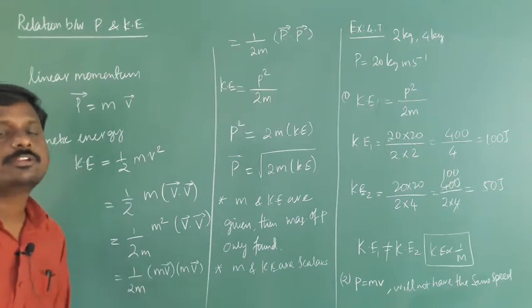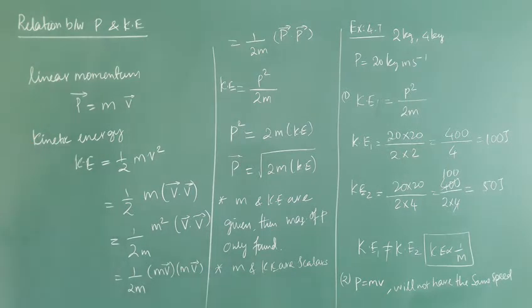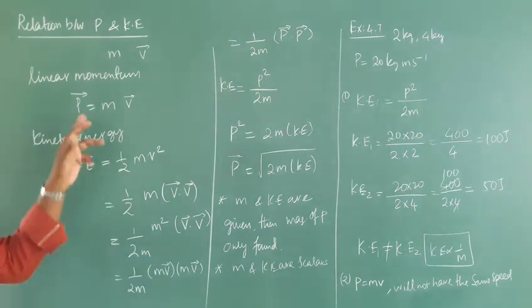Good morning students. In this class, we are going to discuss the relation between kinetic energy and momentum. Consider an object of mass m moving with velocity v, having linear momentum P equal to mass into velocity, and having kinetic energy half mv square.